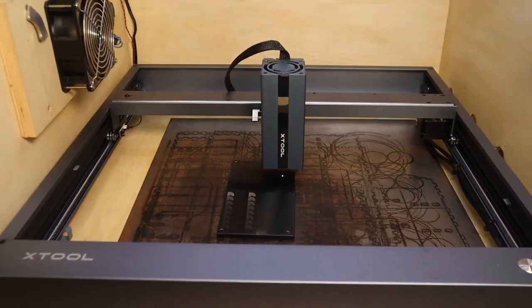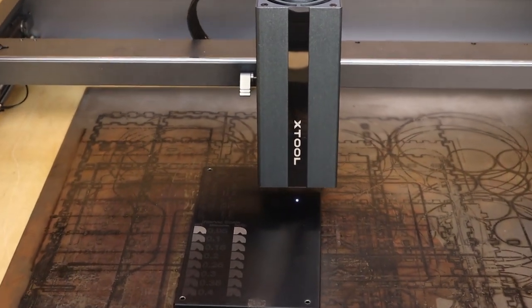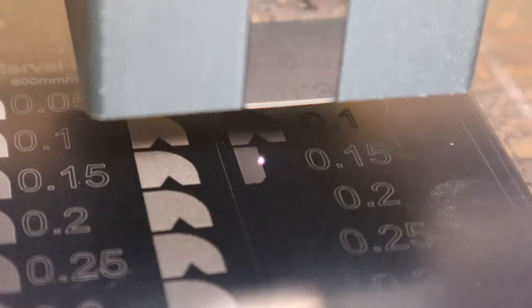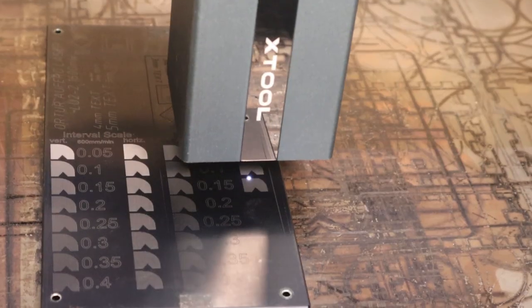You may be thinking that 2 watts of power is very low, but since the absorption of the infrared light is different, it engraves plastics and metals like butter at lightning speeds thanks to the incredibly tight focus as you will see later in the video.